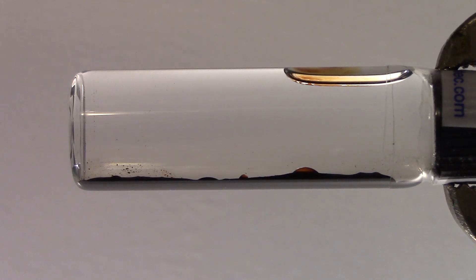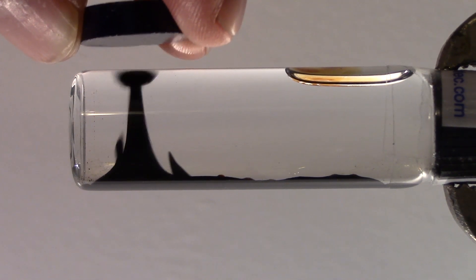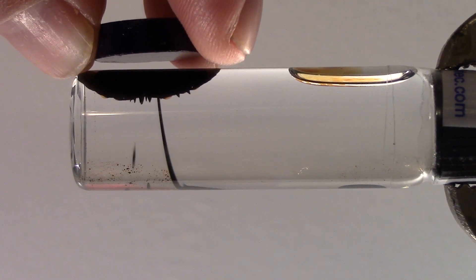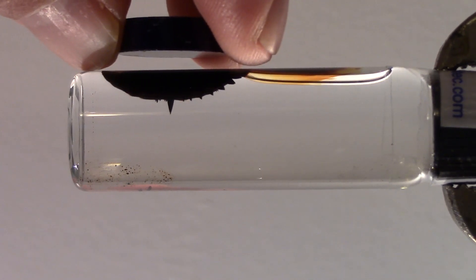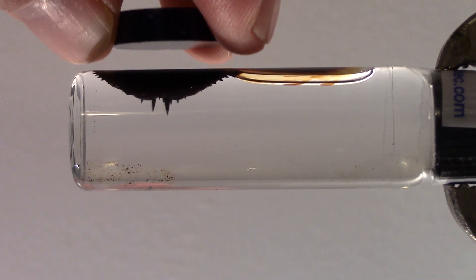Besides keeping the voice coil better centered in the gap, the liquid draws heat away and sinks it to the magnet structure, keeping the voice coil cooler and less likely to warp or burn out when operating under high power.